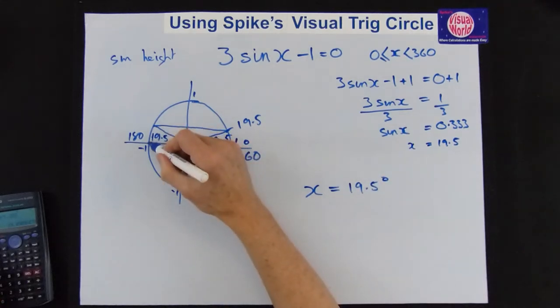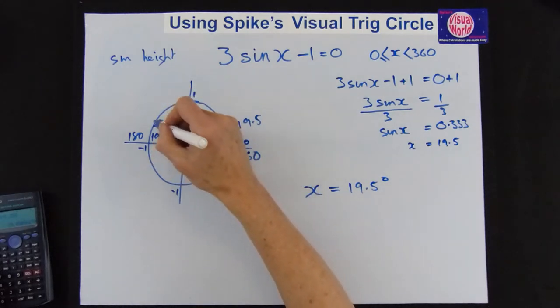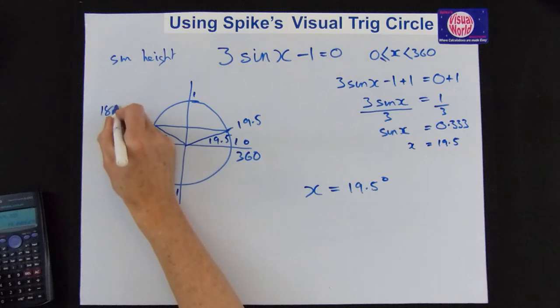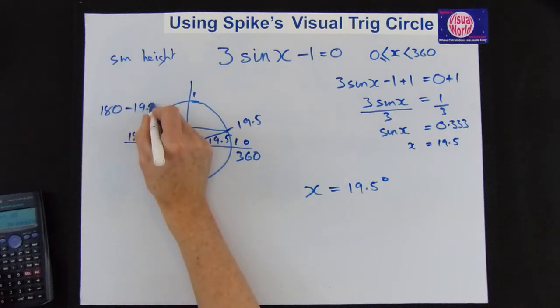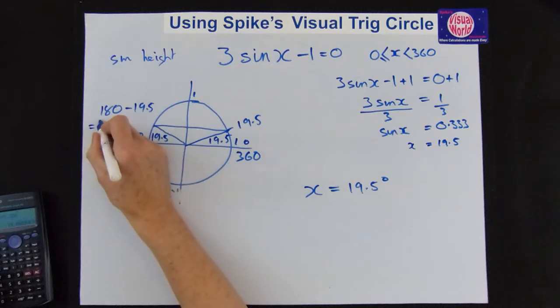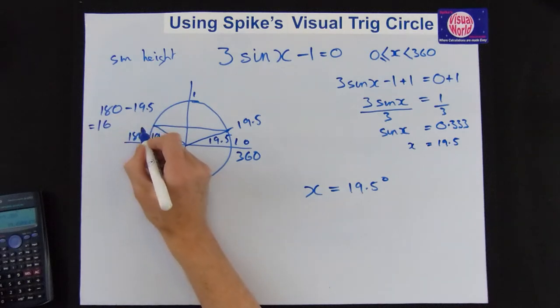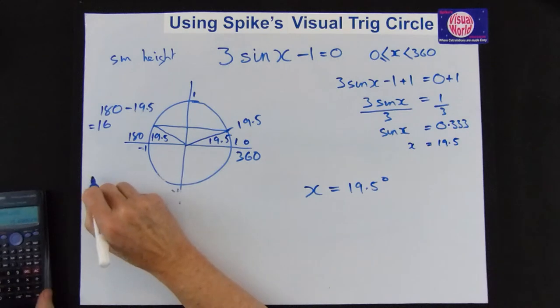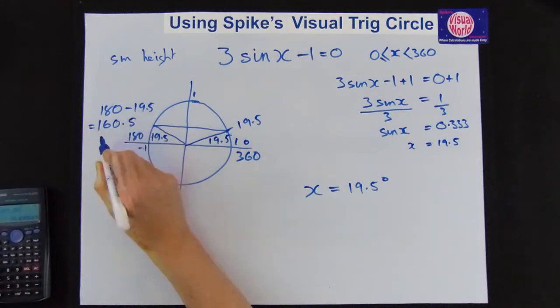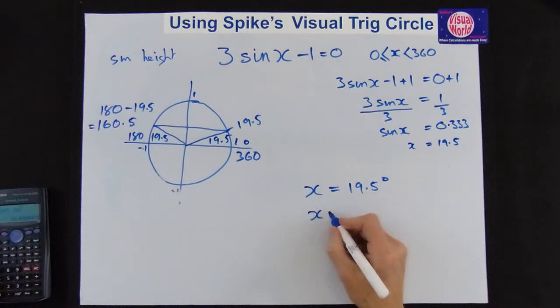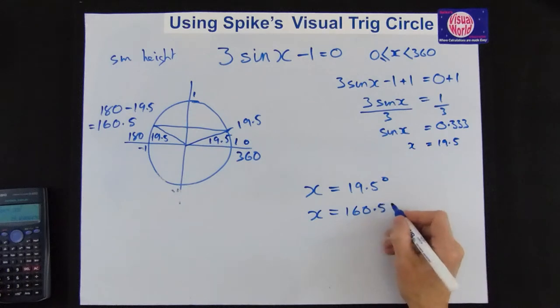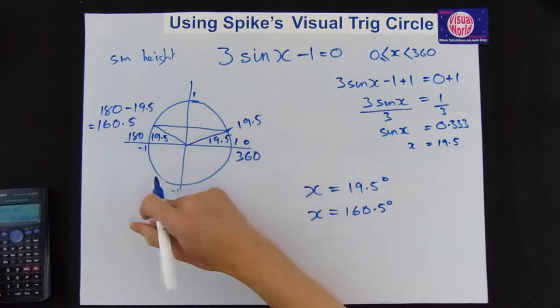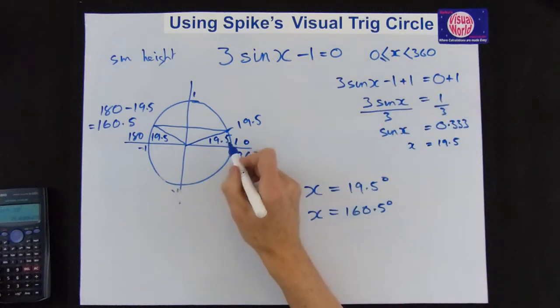The other one isn't quite around to 180. It's back 19.5. Remember you're going around to 180, you're back 19.5. So we get 180 minus 19.5. You can do it in calculator if you like. It's 160.5. And that's the other answer. x equals 160.5 degrees. And that is it solved. No messing around. We're just asked between nothing and 360. And that's our two answers. There's no answers in the bottom.